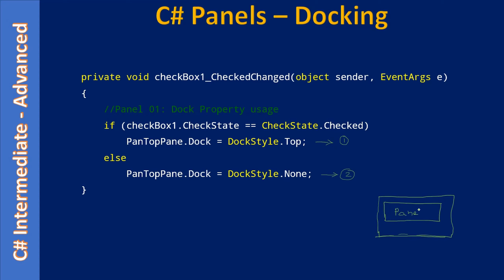If I set the top property on this panel, what happens is the panel will be docked towards the top. The shaded area is the panel, and the entire outer area is the form. I can resize this form — if I resize the form width-wise, the panel will also get resized width-wise. But if I resize the form height-wise, the panel will not get resized; it will still have the same size and position.